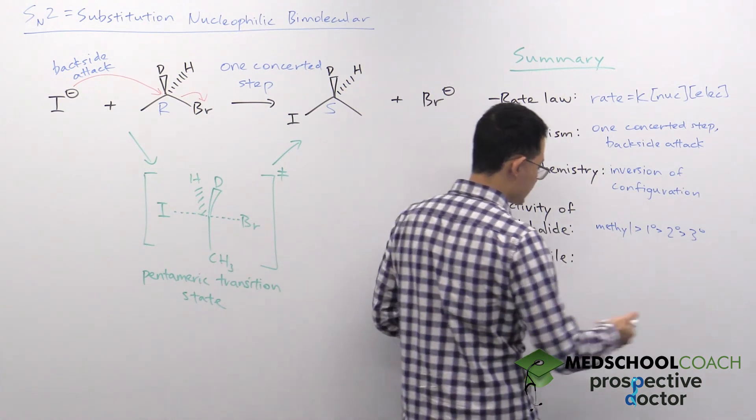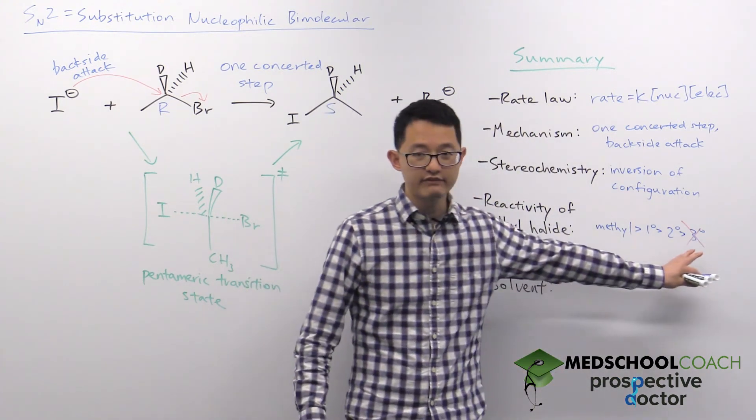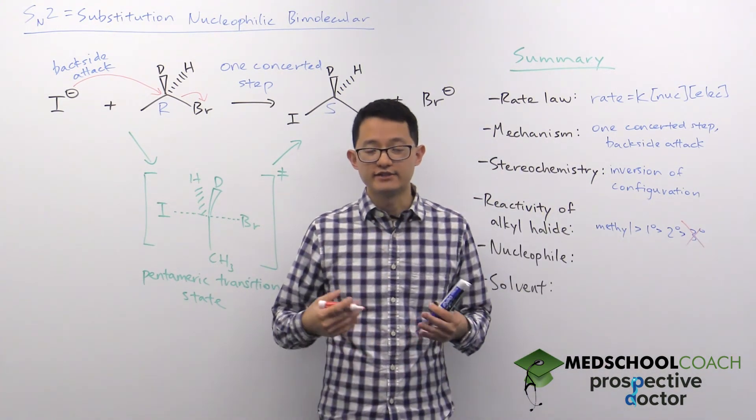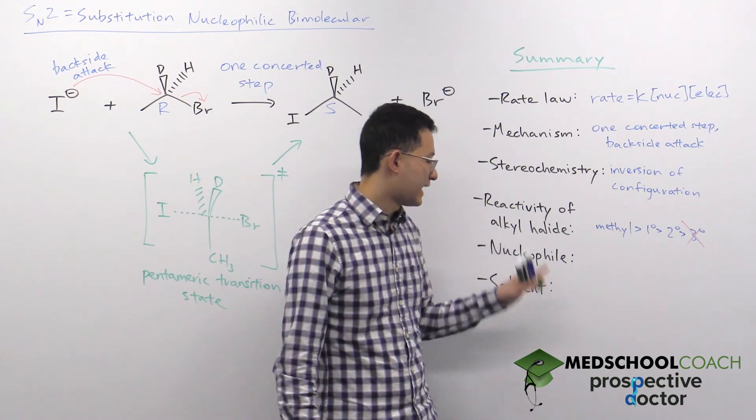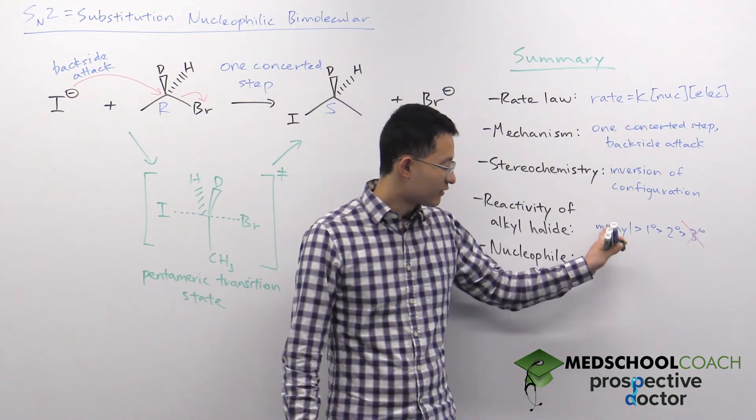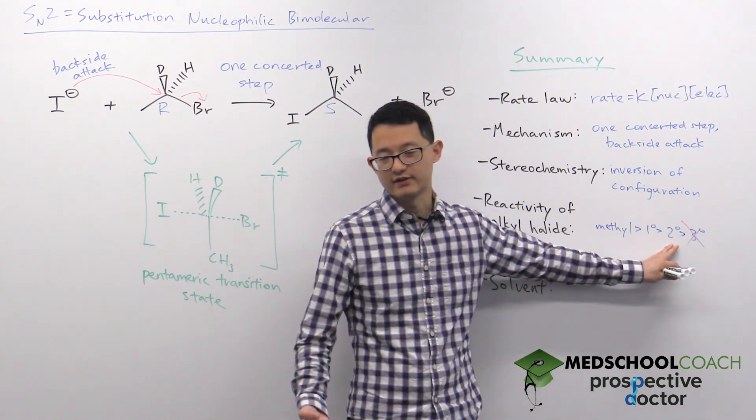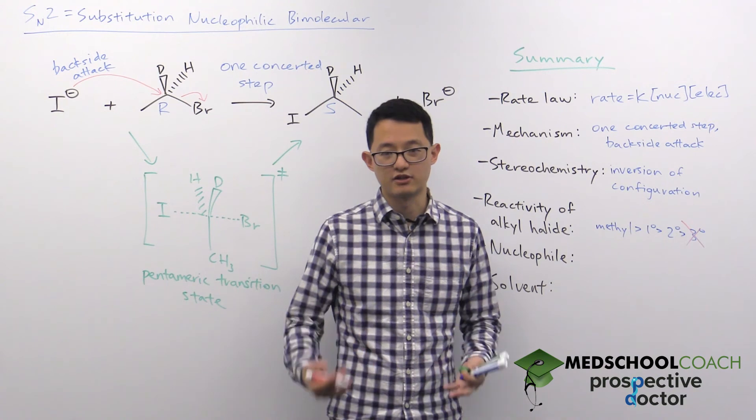So as it turns out, SN2 reactions don't actually even occur with tertiary substrates. If you have a tertiary substrate, there's actually too much steric hindrance that SN2 reactions can't even occur. So it's mostly for methyl substrates and primary substrates. And it can occur for secondary substrates, but at a slower rate.